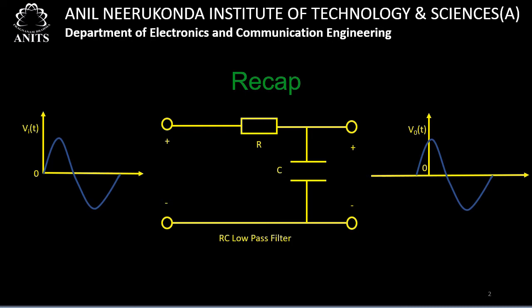Unlike that, when non-sinusoidal signals are passed through linear circuits, the input waveform is going to get altered. Altering the shape of the input signal by passing it through a linear network is what is called linear wave shaping. The RC low-pass filter circuit and RC high-pass filter circuit come under linear wave shaping circuits.